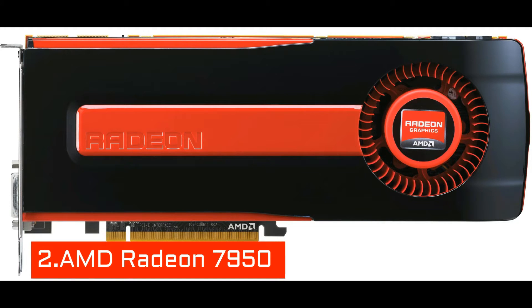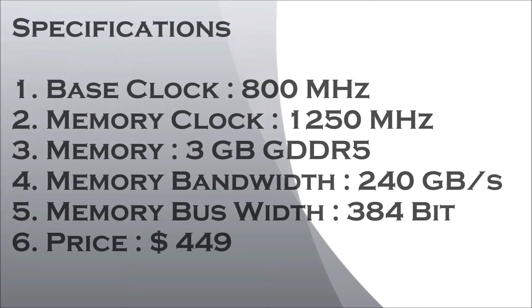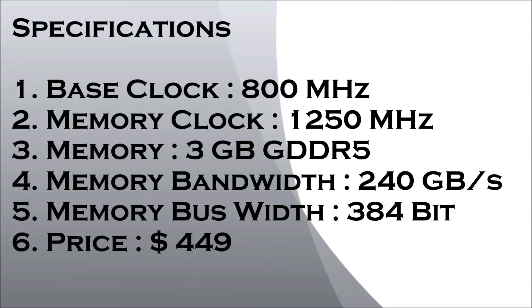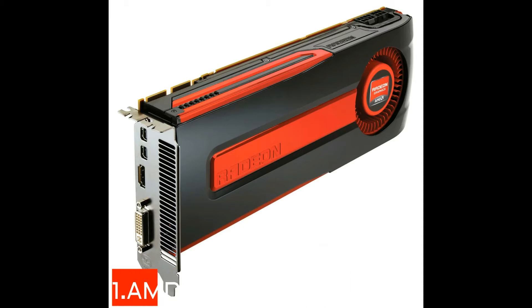The second card is the AMD Radeon HD 7950. The base clock is 800 MHz, the memory clock is 1250 MHz, and the memory is 3 GB GDDR5. The memory bandwidth is 240 GB per second, the memory bus width is 384-bit, and the price is approximately $409.